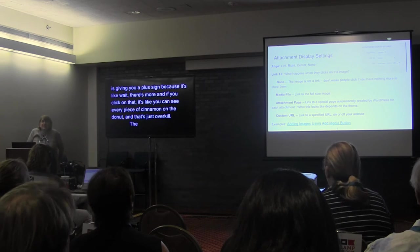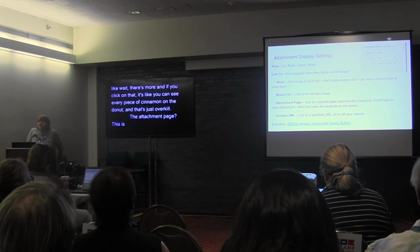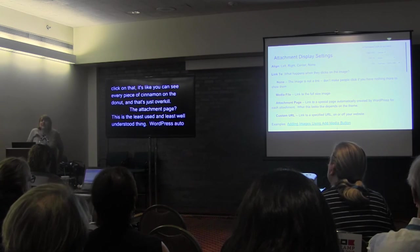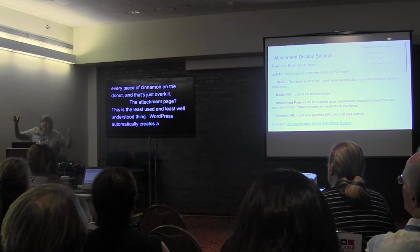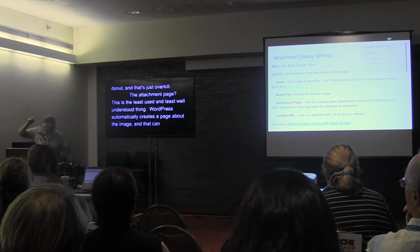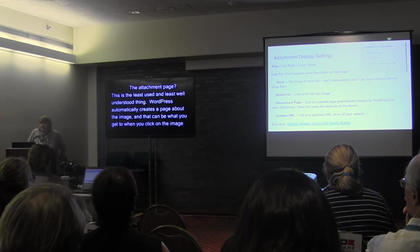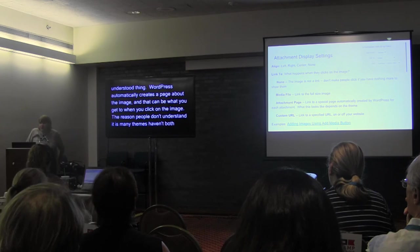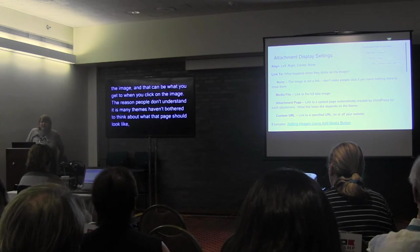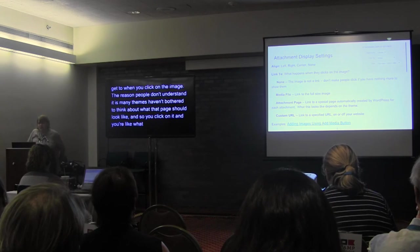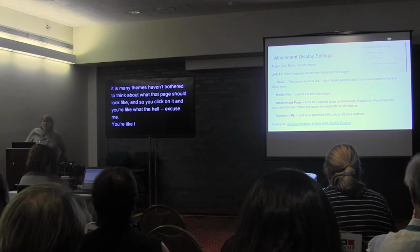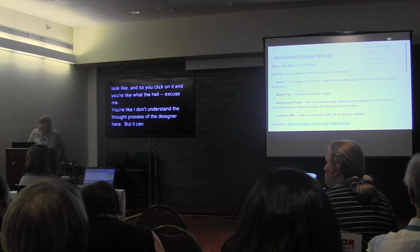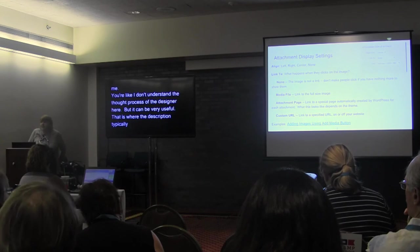The attachment page is the least used and least well understood option. WordPress automatically creates a page about the image, and that can be what you get to when you click on the image. The reason people don't understand it is that many themes haven't bothered to think about what that page should look like, so you click on it and think 'what the hell?' But it can be very useful — that is where the description typically displays.